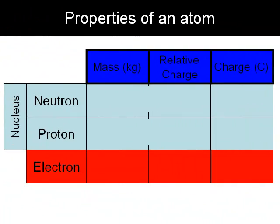An atom consists of three main components: the neutron, the proton, and the electron.